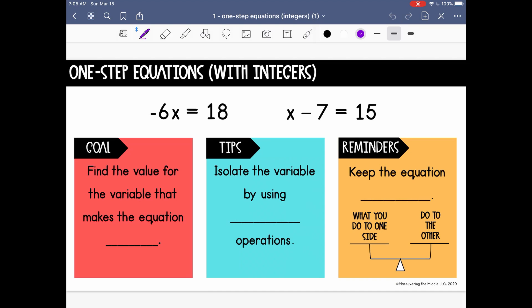When we're talking about one-step equations with integers, we're looking at something like -6x = 18 or x - 7 = 15. And remember, when we are solving equations, our goal is to find the value for the variable that makes the equation true.